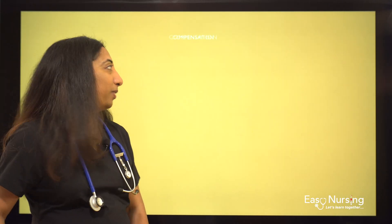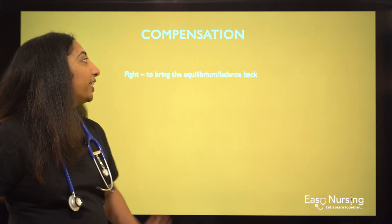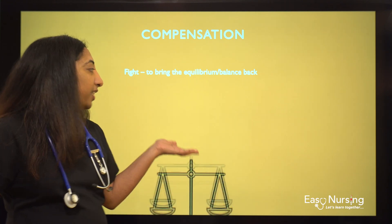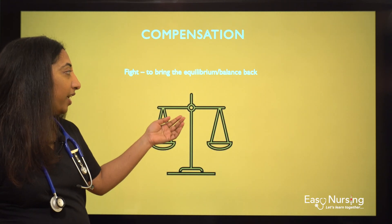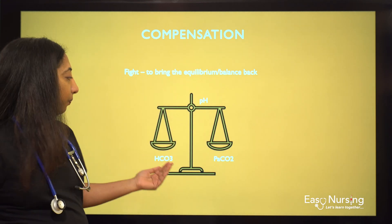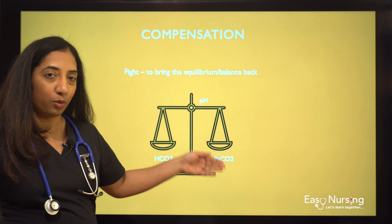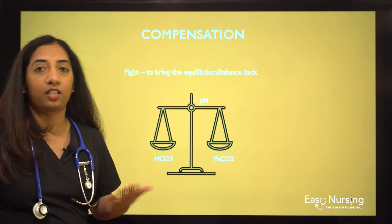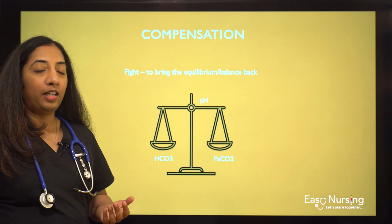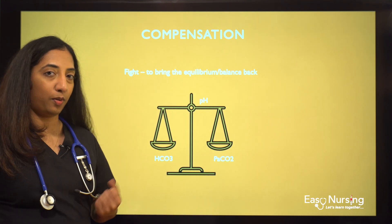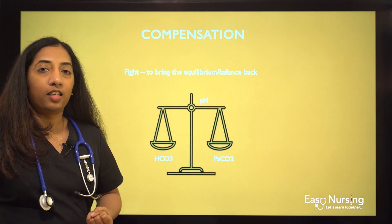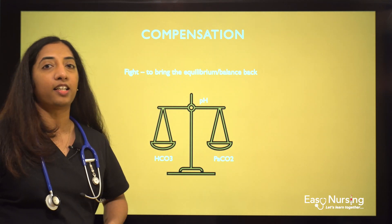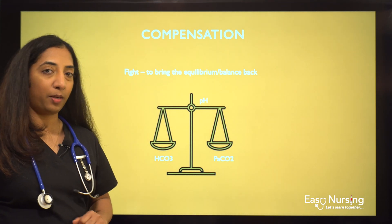Let's talk about the final step — compensation. Compensation is the fight to bring that equilibrium back. If we have an abnormal pH, bicarb or PaCO2 will increase or decrease to bring that pH back to normal — that is compensation. We have three types: non-compensation or uncompensated, partially compensated, and fully compensated.